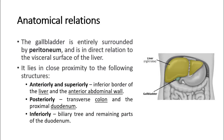The gallbladder is entirely surrounded by peritoneum and is in direct relation to the visceral surface of the liver. It lies in close proximity to the following structures: anteriorly and superiorly are the inferior border of the liver and the anterior abdominal wall; posteriorly are the transverse colon and the proximal duodenum; and inferiorly are the biliary tree and remaining parts of the duodenum.